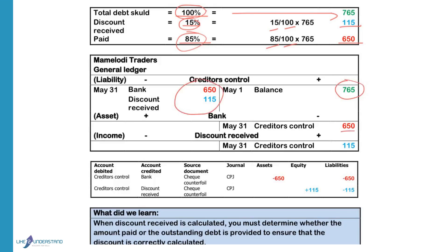Bank will be credited because the asset decreases on the credit side. Discount received will be credited because income increases on the credit side. Creditors control is debited to decrease the liability. Bank is credited to decrease the assets. We will use a cheque counterfoil as the source document and record this in the cash payments journal. For the discount, creditors will be debited again to reduce the liabilities.